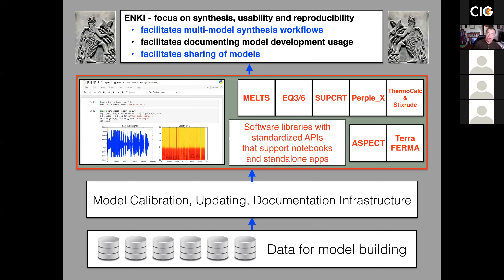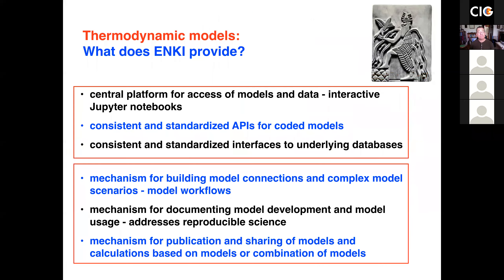Now, of course, we haven't achieved all aspects of this project with Enki, but I want to talk today about some of the things we have been able to do and how we've implemented that. We've chosen Jupyter Notebooks as an access platform for the underlying software infrastructure, and we've created a standardized API for all of the existing coded models of thermodynamic properties that can be accessed through these Jupyter Notebooks.